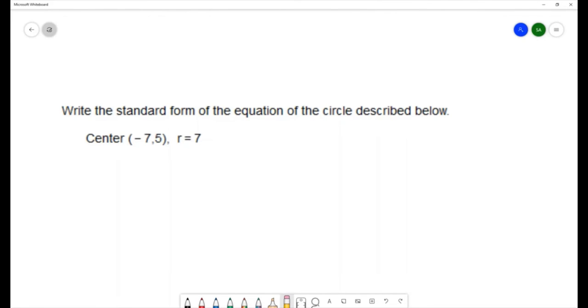For this question, we want to write the standard form of the equation of a circle described below. Our circle needs to have a center of (-7, 5) and a radius of 7, so in order to solve this problem...